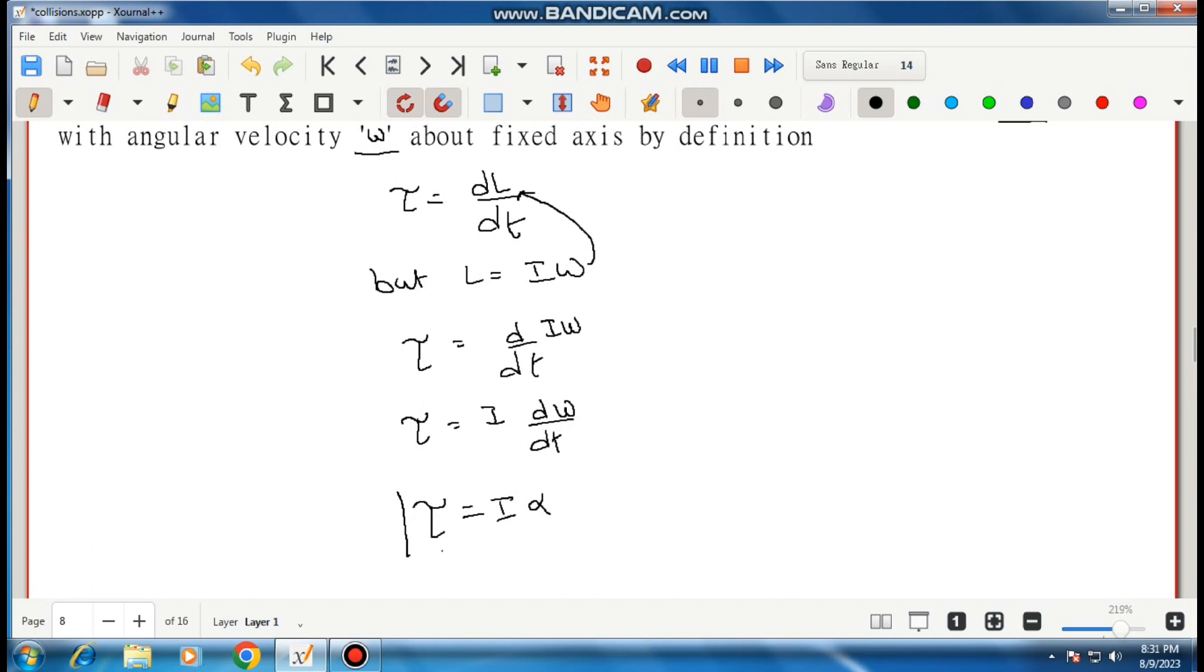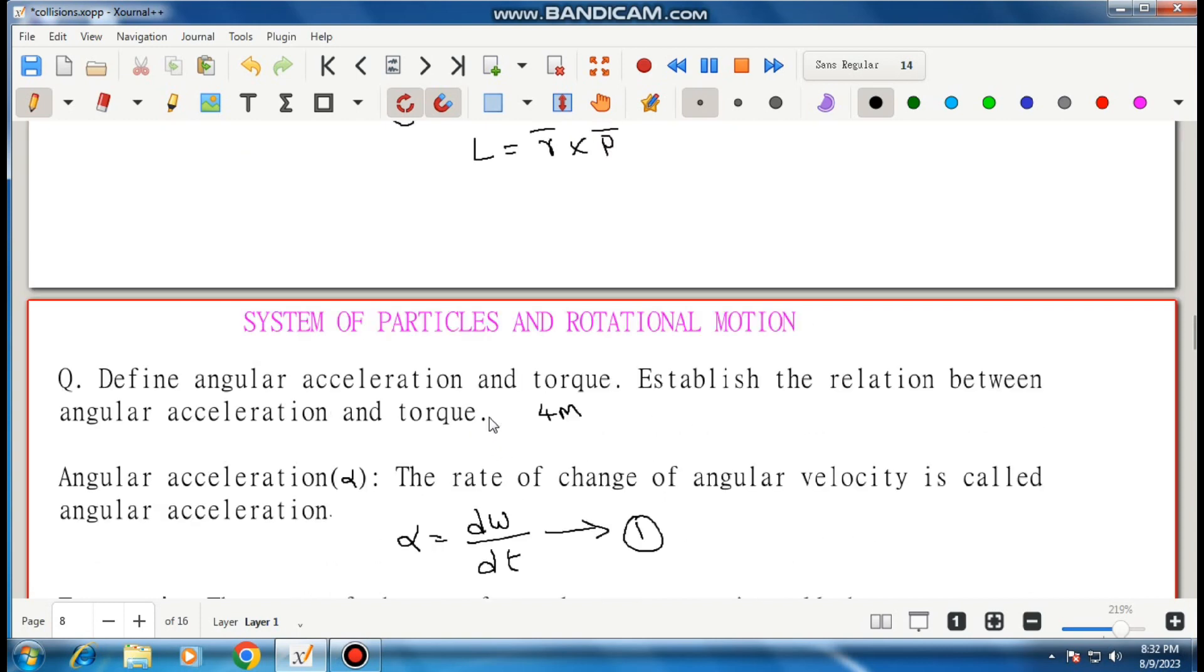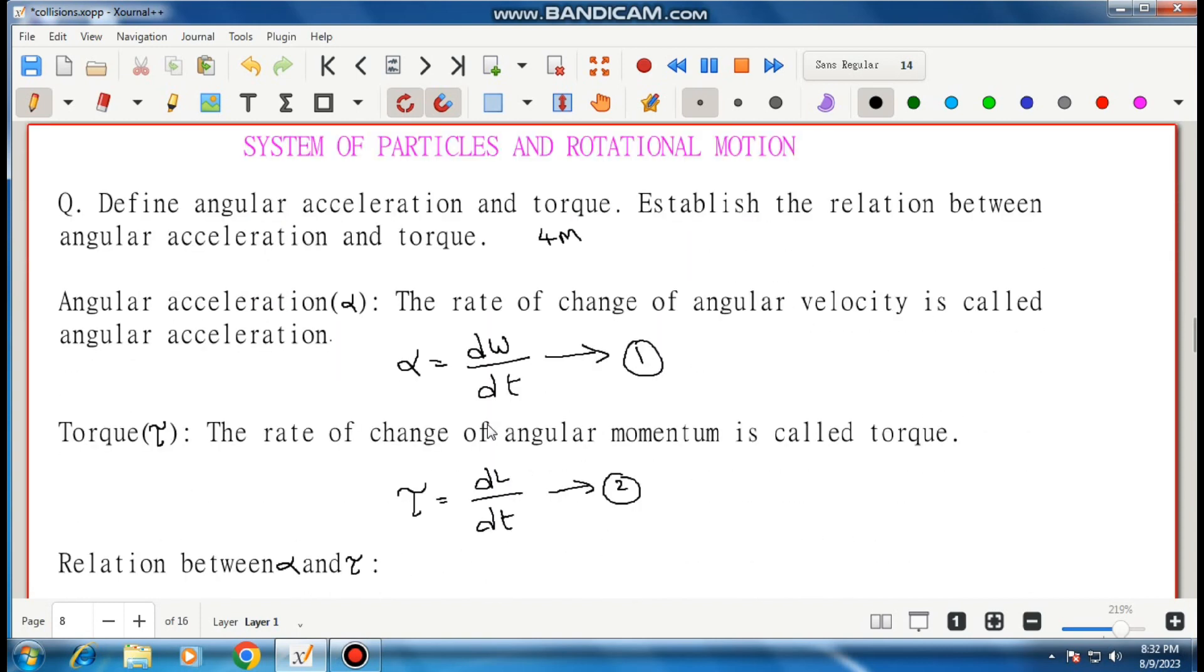Tau is equal to I alpha. The given derivation is proved. This question carries 4 marks. Thank you.